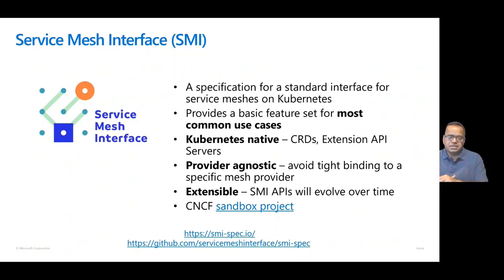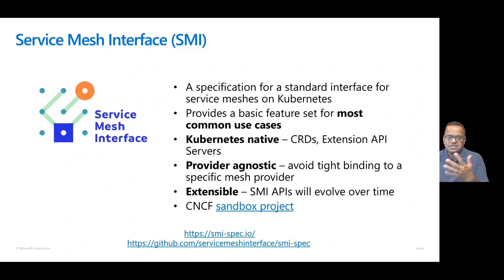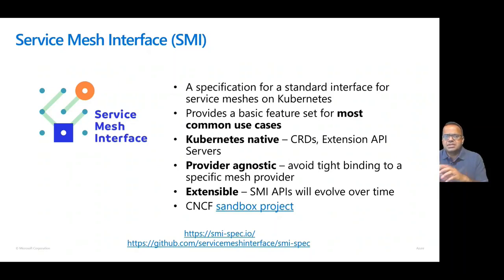Why do you need a Service Mesh interface? Think about it like the way we have Ingress as part of Kubernetes definitions. Ingress itself can be implemented by multiple options like an Application Gateway, Nginx, or HAProxy. Similarly, you could have an SMI-based implementation where your tooling and ecosystem just talk to the SMI interface, and the underlying services can be provided by any Service Mesh that implements SMI. Today, SMI covers the basic set of use cases and we expect it to encompass more capabilities over time.